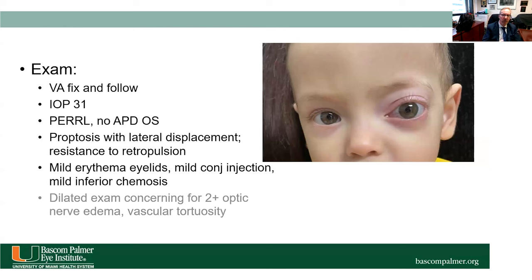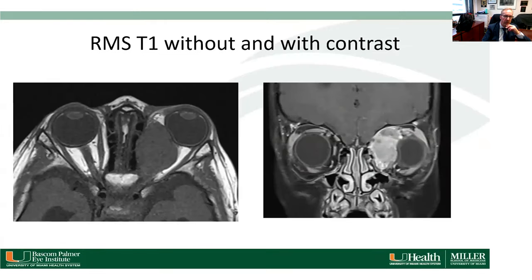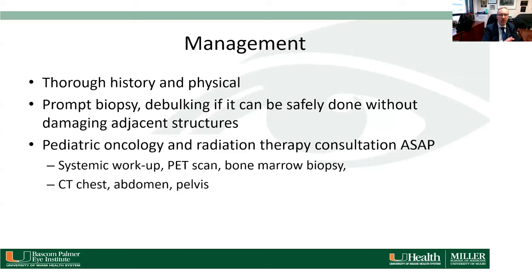This patient had slowly progressive proptosis of his left eye with intraocular pressure of 31, normal pupils, lateral displacement of the eye, mild erythema, subconjunctival injection, and inferior chemosis. On MRI with and without contrast, there is a very large medial mass extending deep into the orbit which enhances with contrast administration.